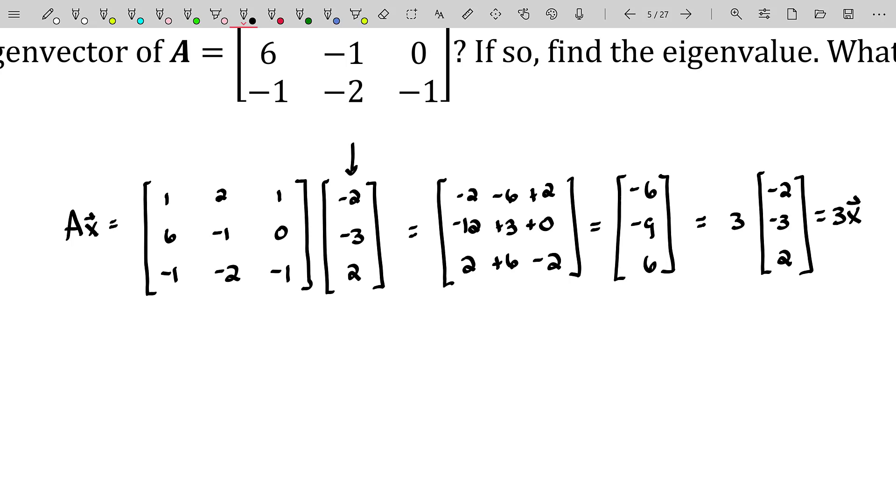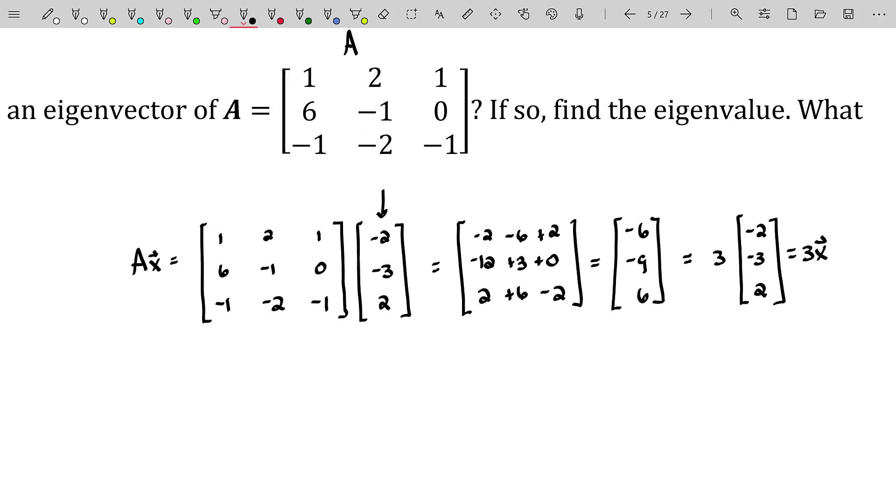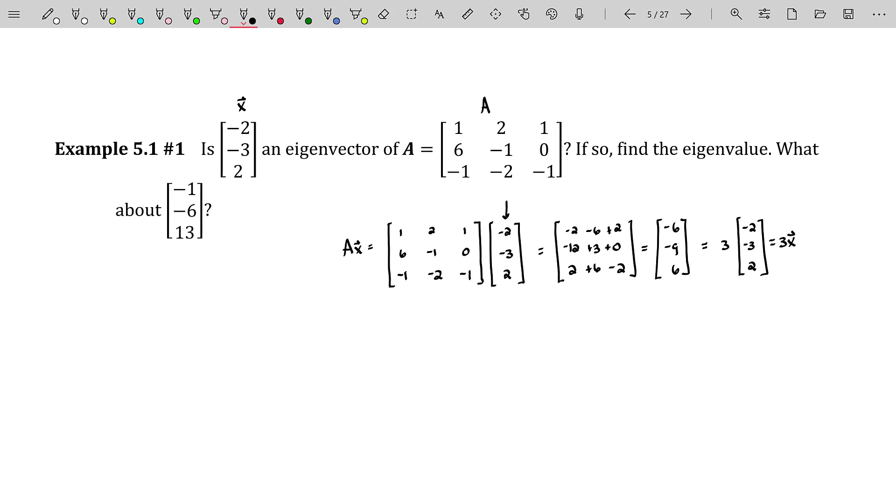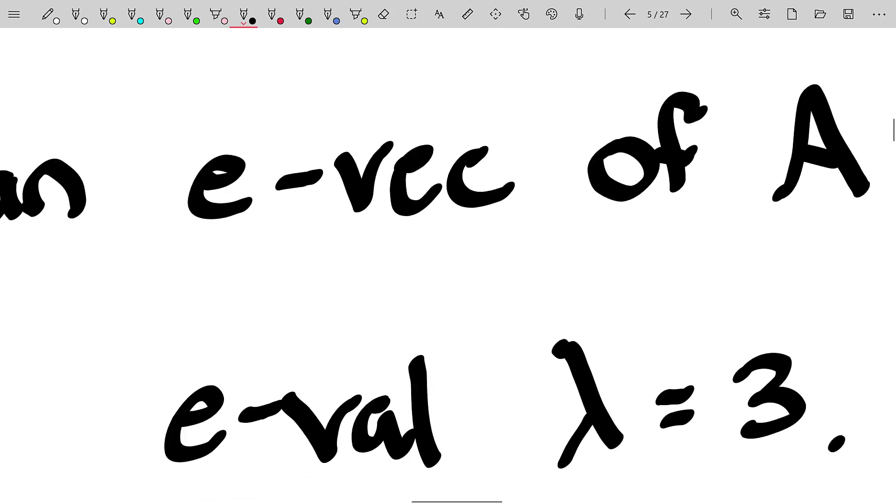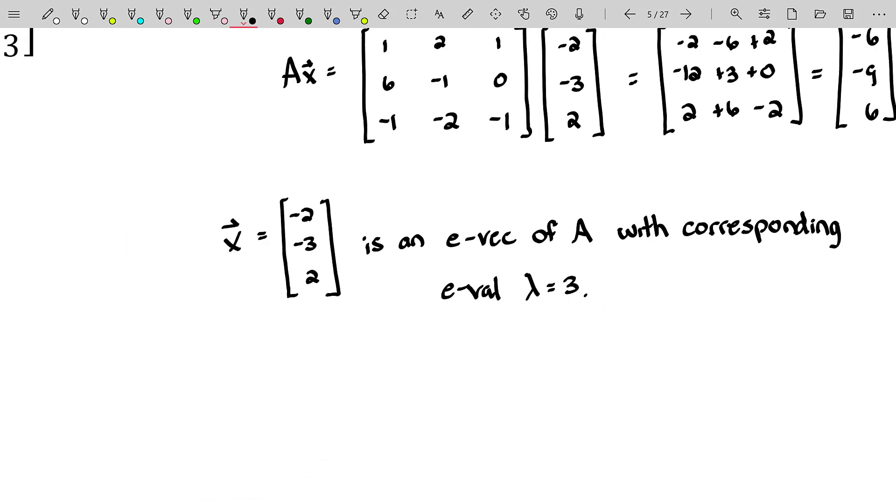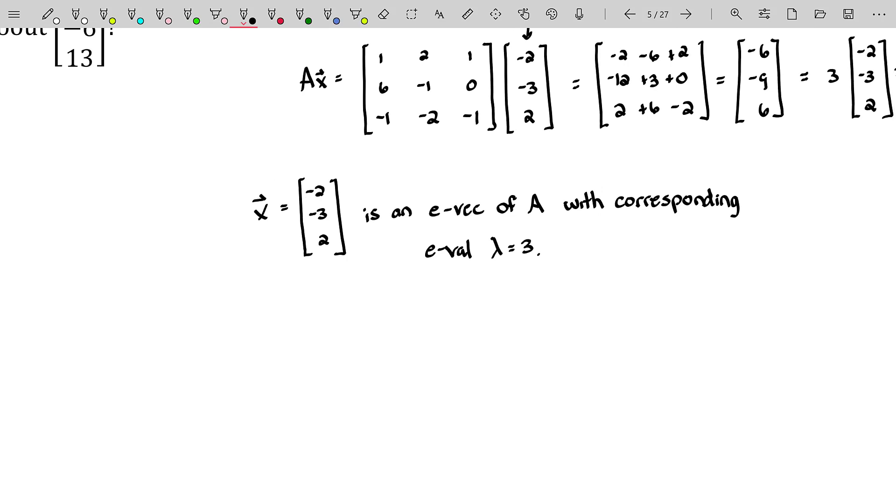And by the way, that's actually what the second part of this question is asking. If so, if it is the case that that vector X is an eigenvector of that matrix A, what's the corresponding eigenvalue? So here's how I would write it. X, which is equal to negative two, negative three, two is an eigenvector. We usually just write evec of the matrix A with corresponding eigenvalue, which again, we just usually write eval lambda equals three. If I just said that to you without telling you what the matrix A is, at least you would know, oh, A times that vector X is just three times that vector X. Perfect.